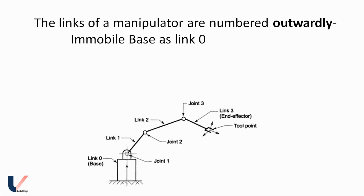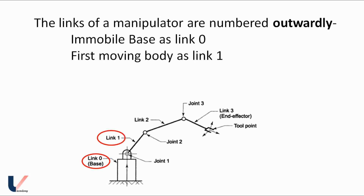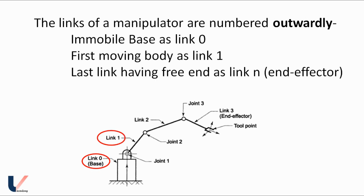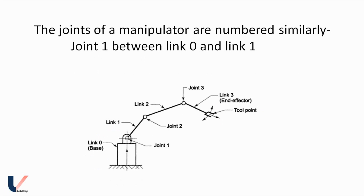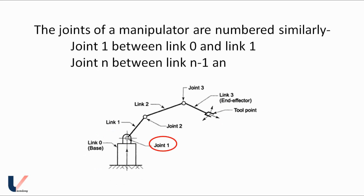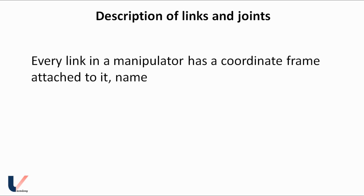The links and joints of a manipulator are numbered outwardly. The mobile base is numbered as link 0, the first moving body as link 1, and the last link with the free end as link n — this last link is the end effector. The joints are numbered similarly: joint 1 is between link 0 and link 1, and joint n is between link n−1 and link n. Note that joint numbering starts from 1, not 0.